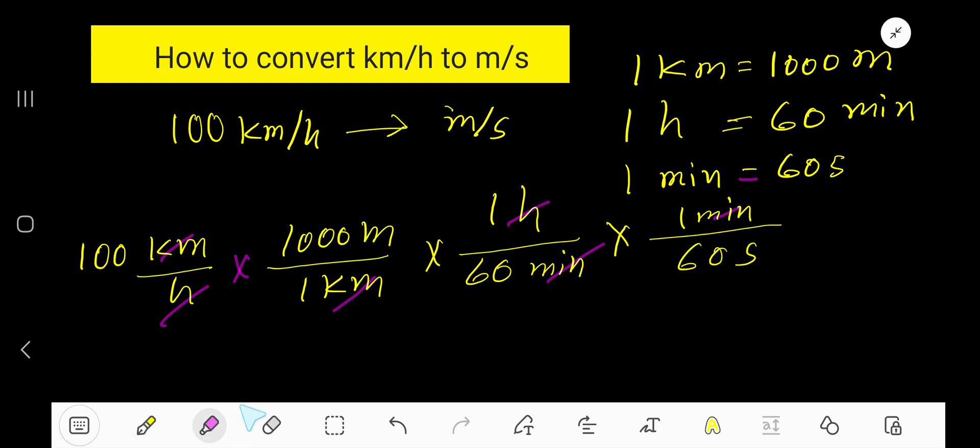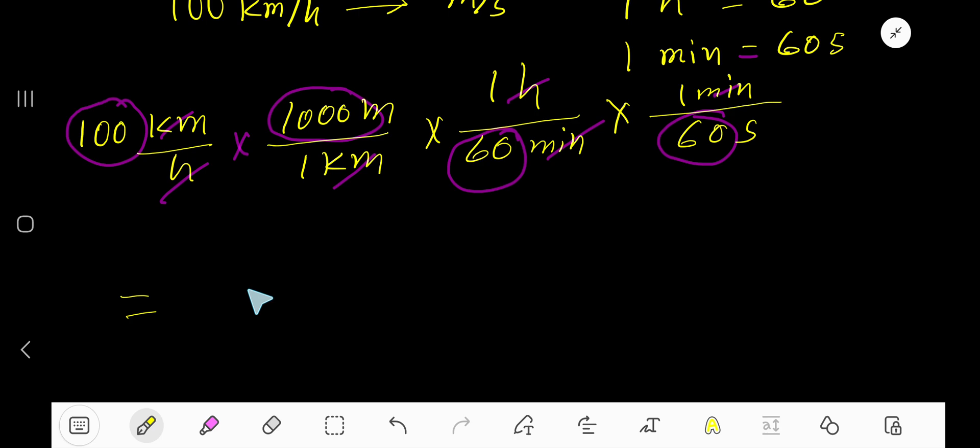Now we'll multiply this number and this number, then multiply with this number and this number. 100 times 1000, so we have unit meter. In the denominator, we have 60 times 60, and we have unit seconds. Now cancel this zero, this zero, this zero. So we are getting this.